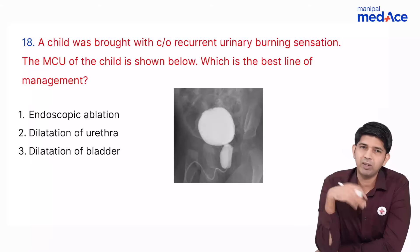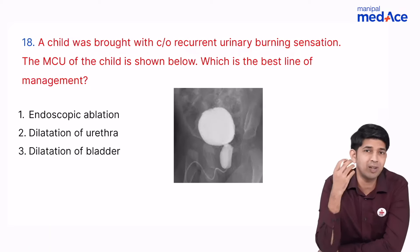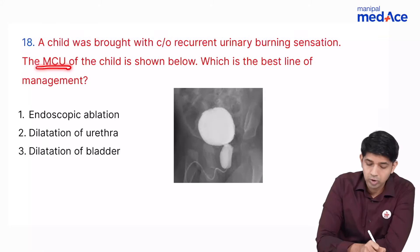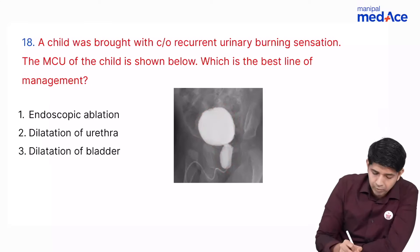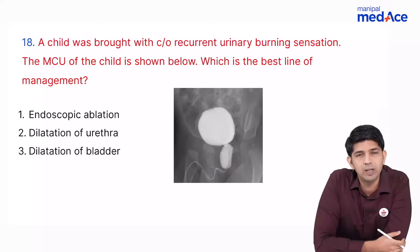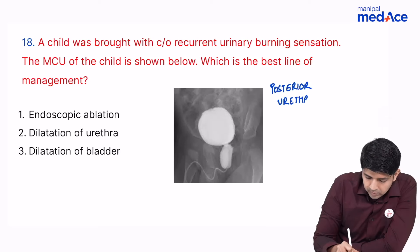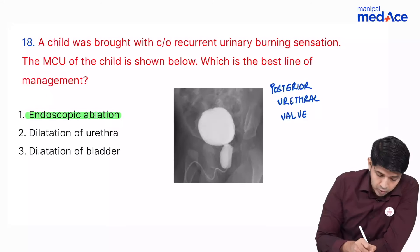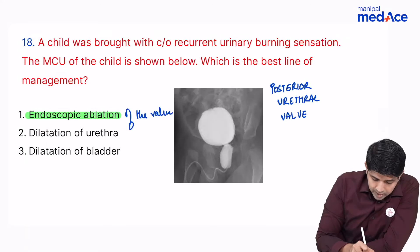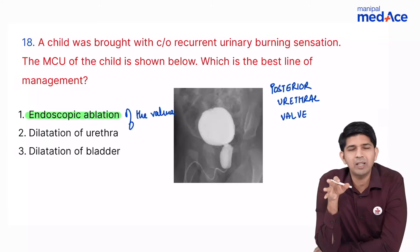A child with recurrent UTI was given a micturating cystourethrogram showing bulging of the first part of the urethra just beyond the bladder, followed by narrowing — indicating obstruction to urine flow. This is a posterior urethral valve. The correct management is endoscopic ablation of the valve. The key was to identify the condition from the image; once identified, the treatment is straightforward.